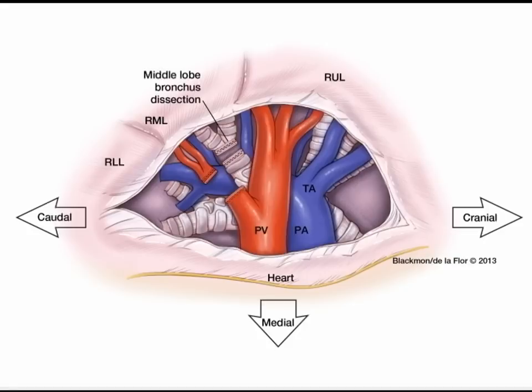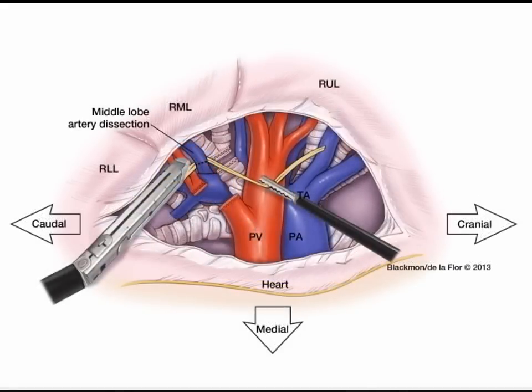Once the right middle lobe bronchial branches have been stapled and divided, it will be easier to see the pulmonary artery branches coming off of the basilar branch and going up to the right middle lobe. After completing division of the right middle lobe bronchial branches, you will encounter the branches of the right middle lobe from the pulmonary artery. It is important to note that this is exactly opposite the superior segment right lower lobe branch on the opposite side of the pulmonary artery. Once the bronchus has been divided, encircle, staple, and divide the right middle lobe pulmonary artery.